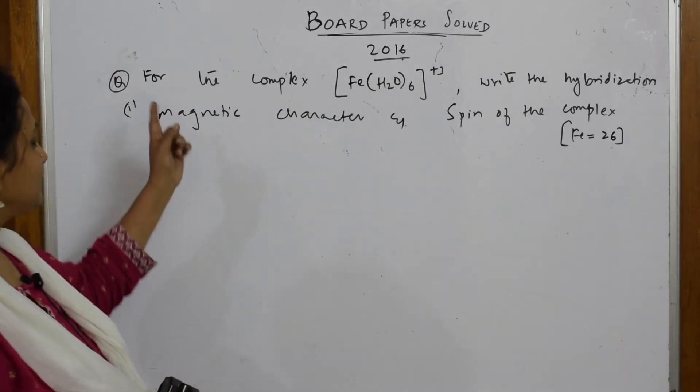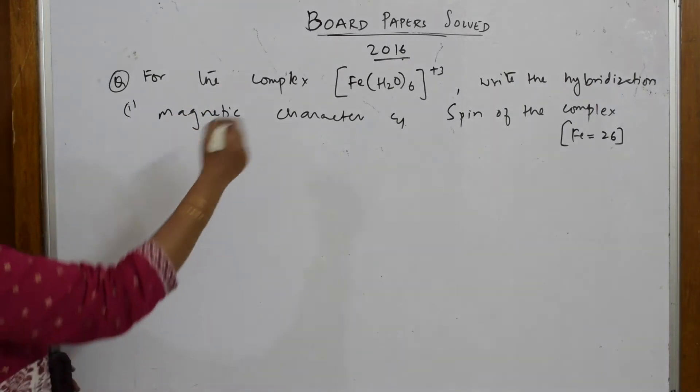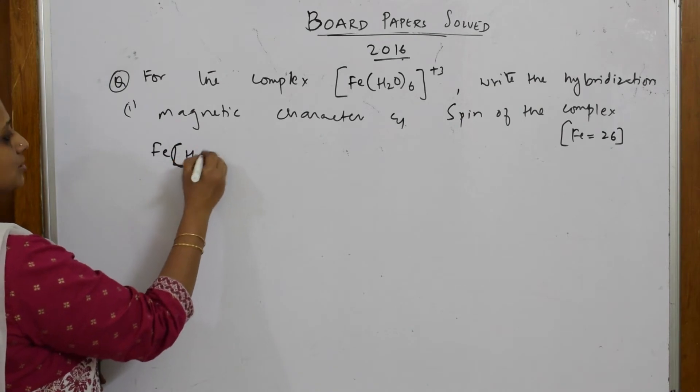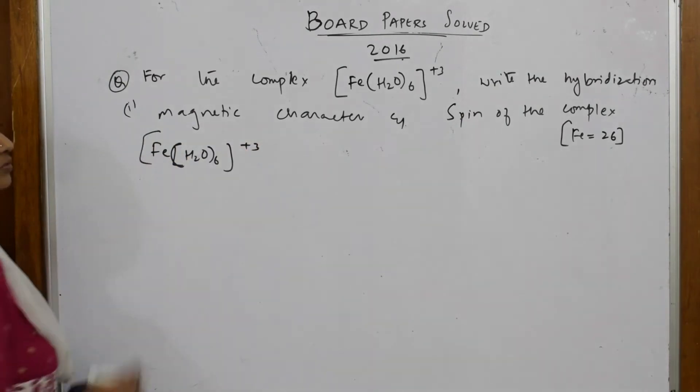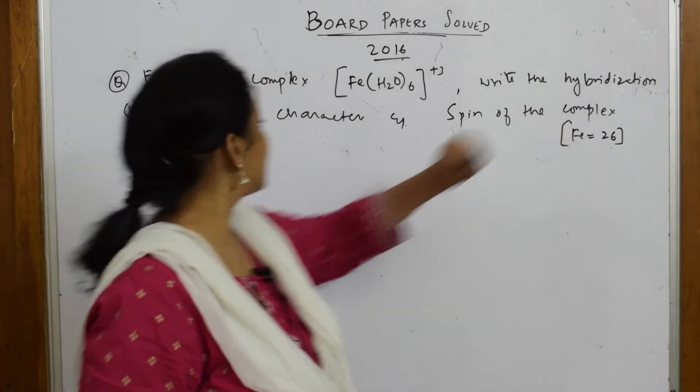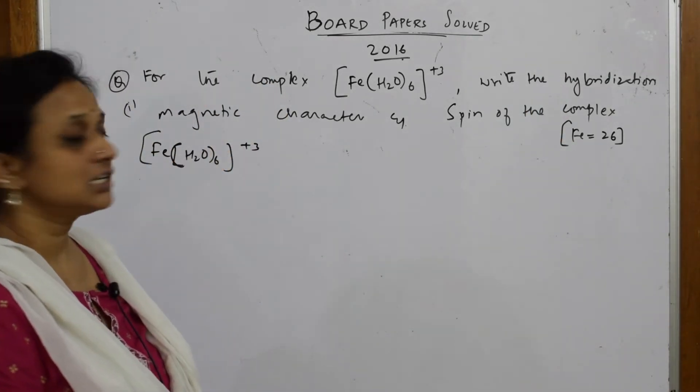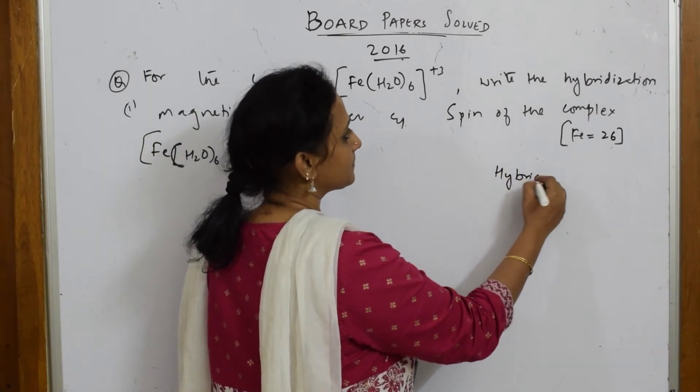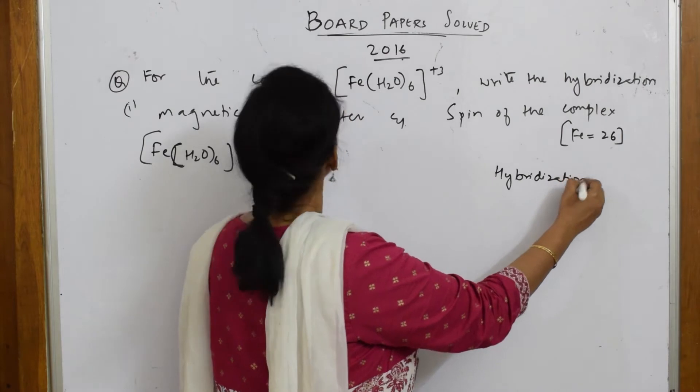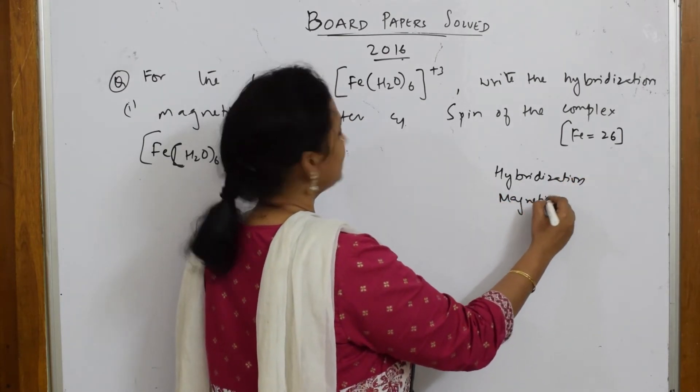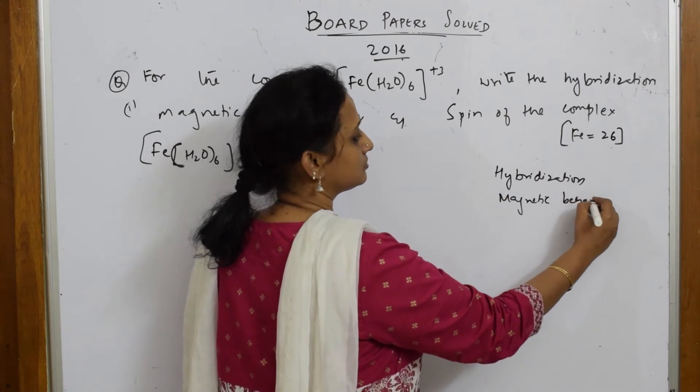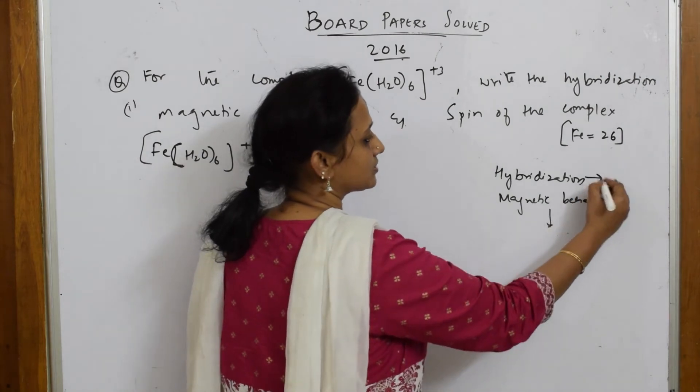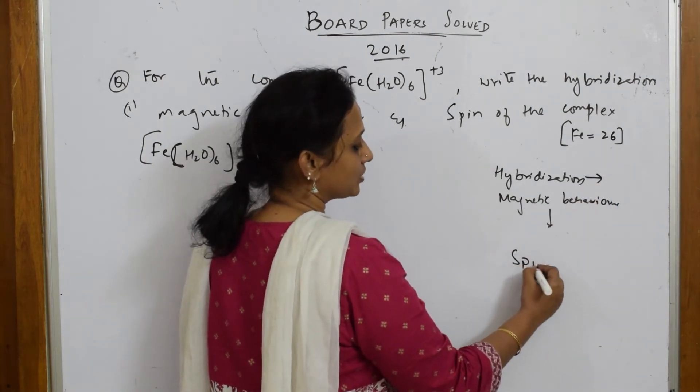I'll do this example again. For the complex Fe(H2O)6²⁺, iron with water as a ligand is given. What should I find out? I have to find out hybridization, magnetic character, and spin of the complex. Basically hybridization, then magnetic behavior, and spin - that is mu s.